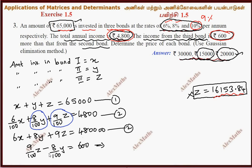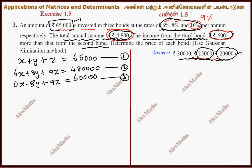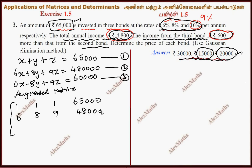This is the first term x — this is 0x. Minus 8y, so 9z minus 8y equals 600. We have 3 equations, and now we set up the augmented matrix with coefficients: 1, 1, 1 | 65,000; 6, 8, 9 | 4800; 0, minus 8, 9 | 600.